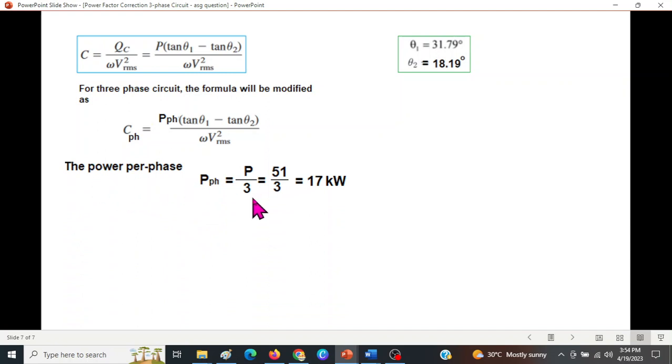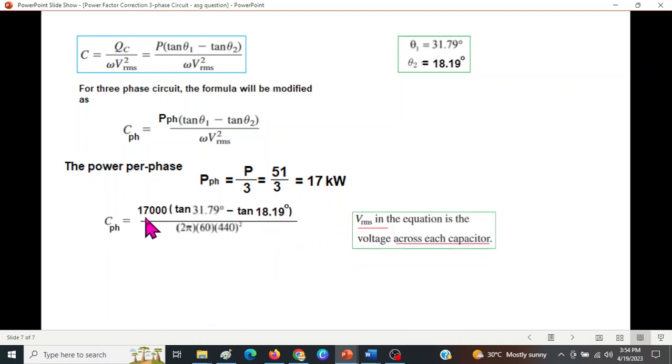And the power per phase is the total power which was 51 kilowatt divided by 3, so 17 kilowatt. We will put this value here: 17 kilowatt, then the tan θ₁, tan θ₂, 2π × 60, and Vrms as I mentioned here, it is the voltage across the capacitor which is given in this question, 440 volts. So we will use that. And solving, we find the answer to be 67.82 microfarad. So I hope you have been able to follow this. Please let me know through your feedback. Thank you.